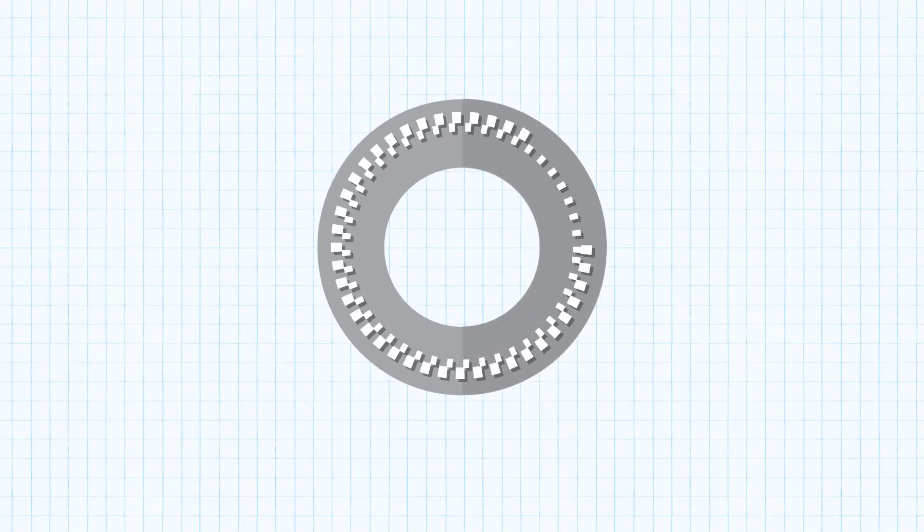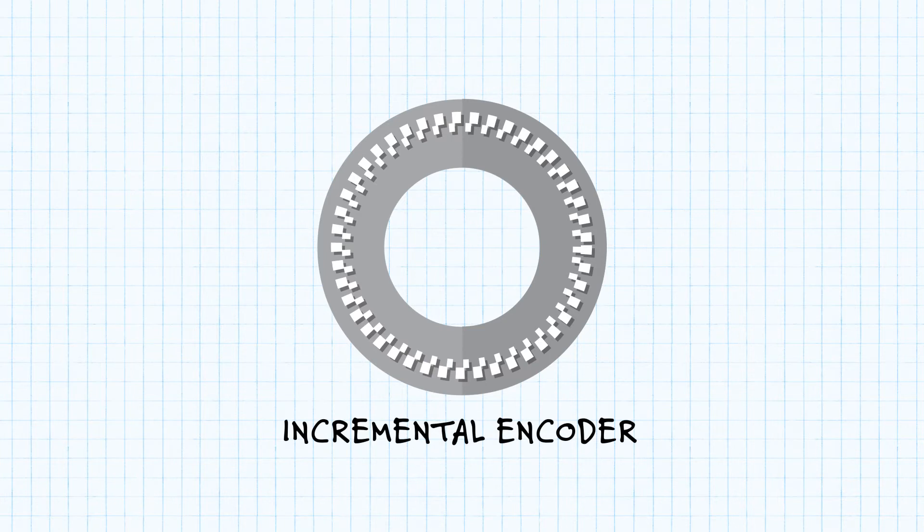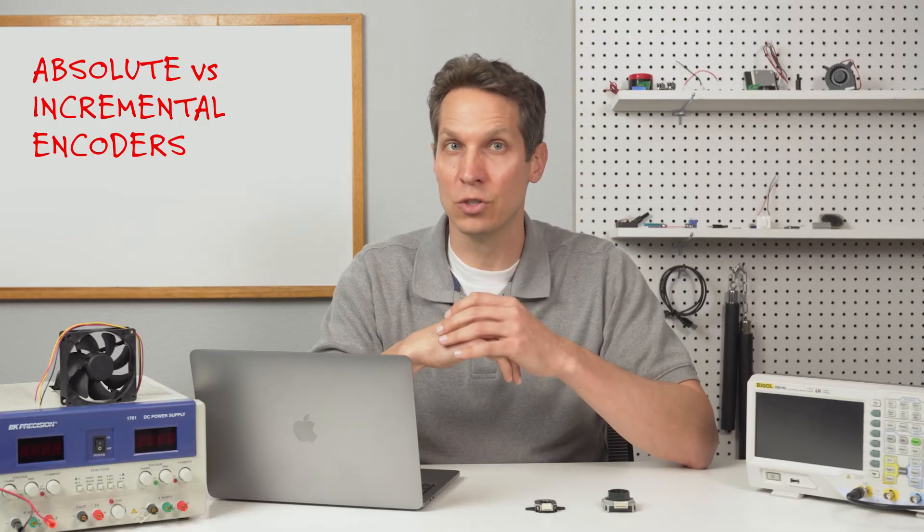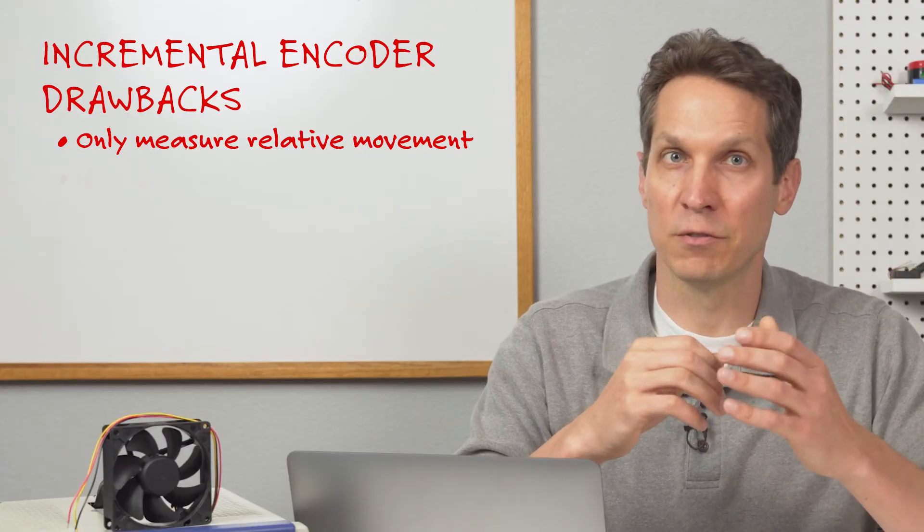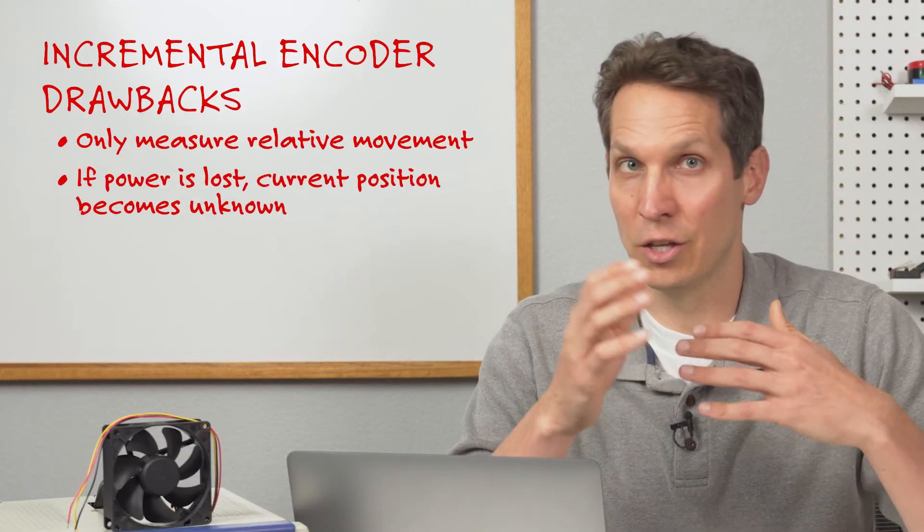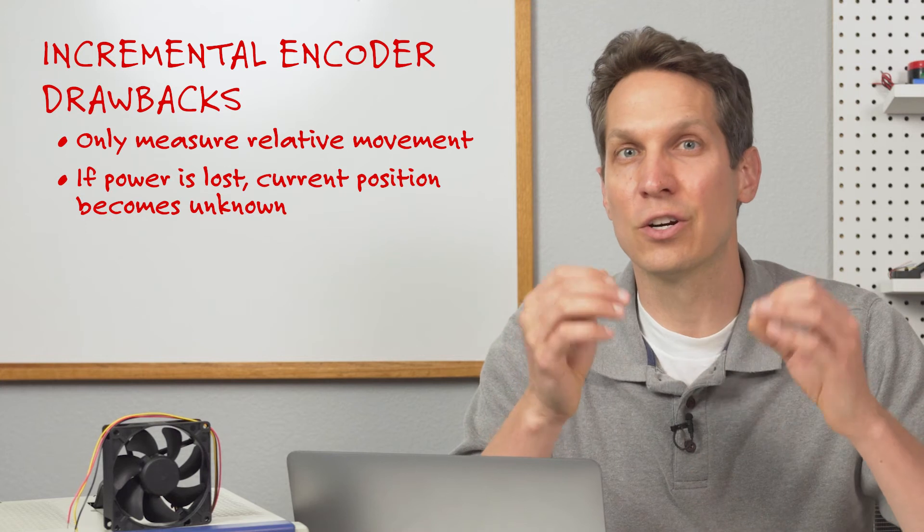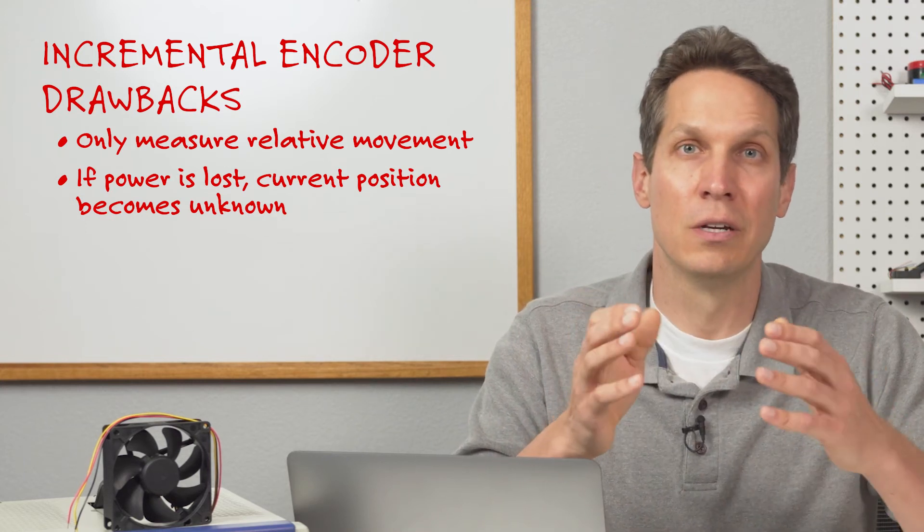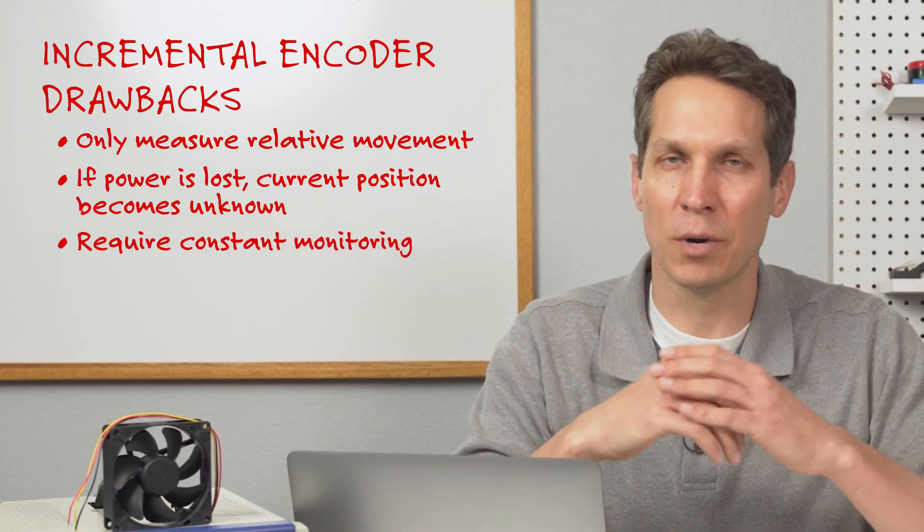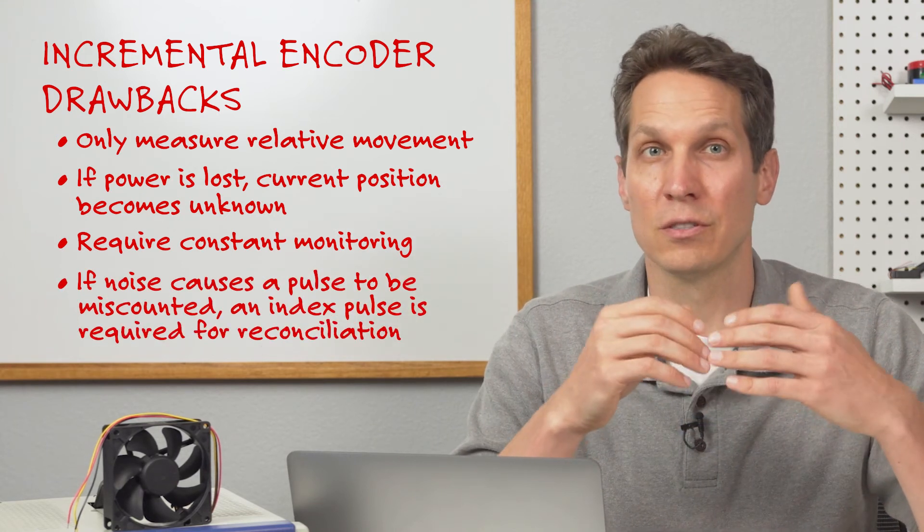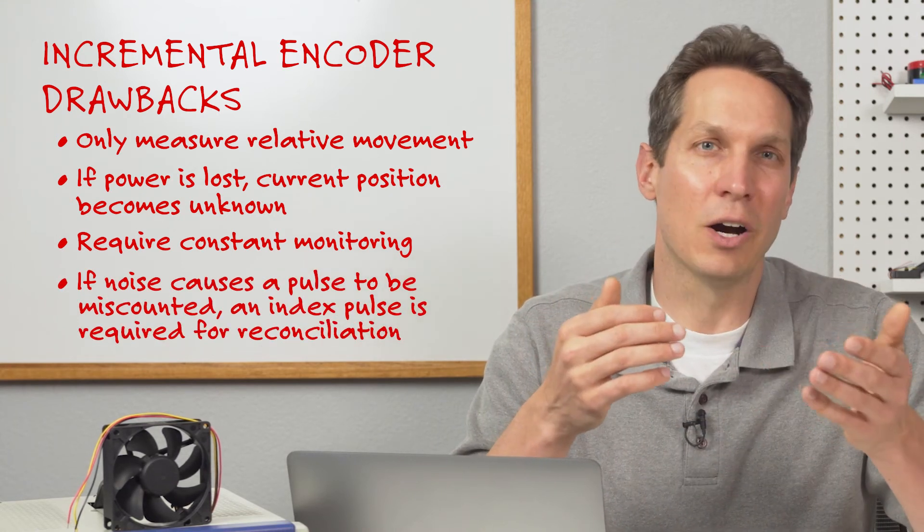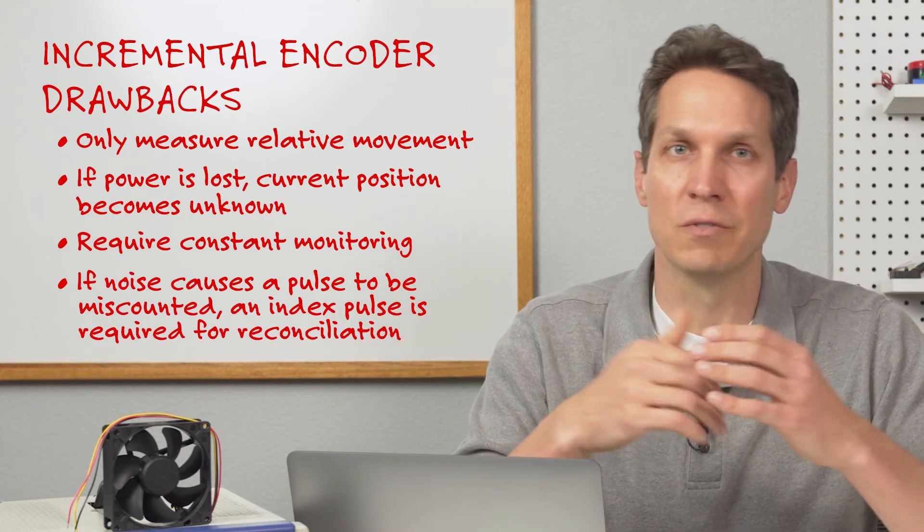Now, while the information provided by an incremental encoder is incredibly useful, there are some drawbacks due to the fact that they only measure relative movement. They only provide information if there's movement and, if there is a loss of power for whatever reason, the current position becomes unknown. They also require constant monitoring, and if there is noise that either causes a pulse to be missed or a false pulse to be counted, the position would be off and need to be reconciled with some sort of index pulse.